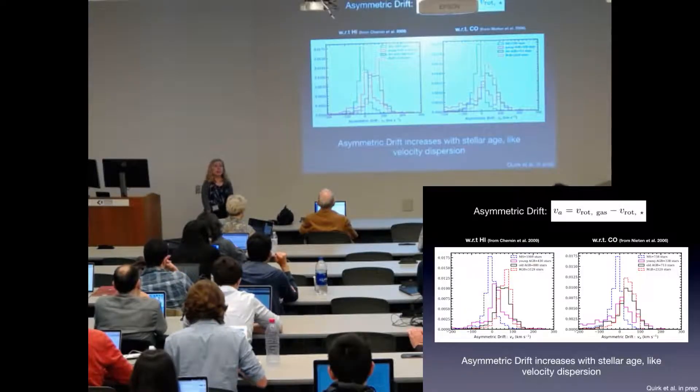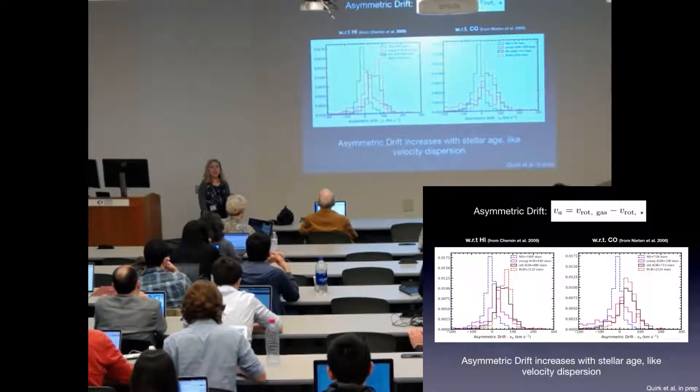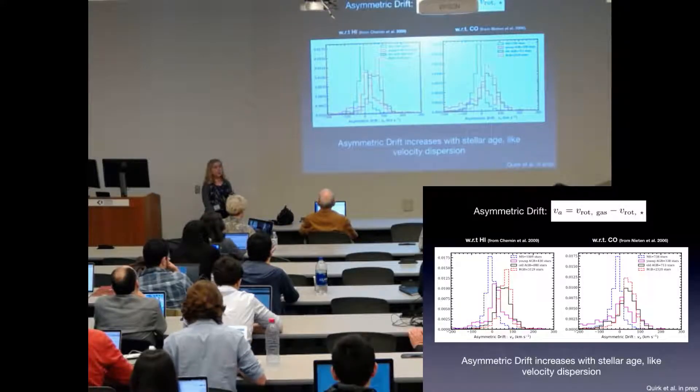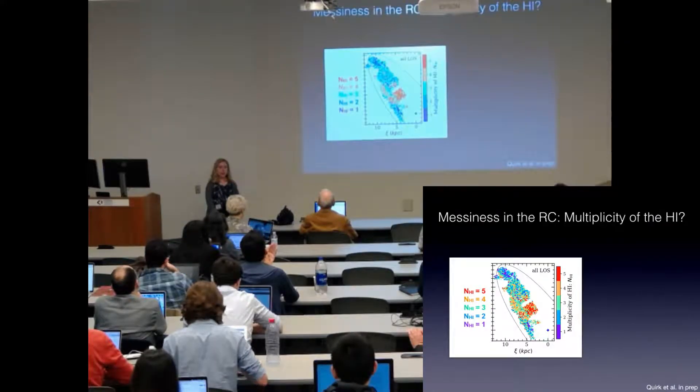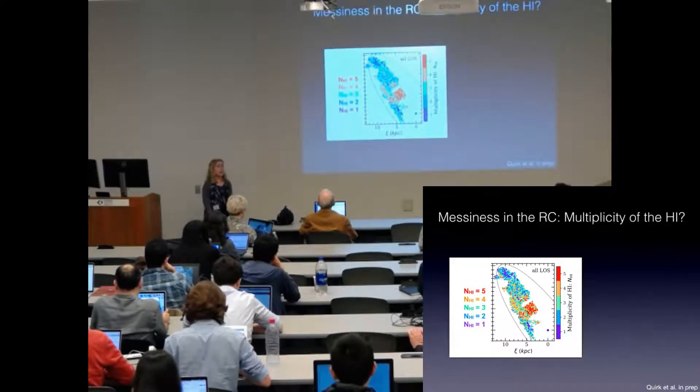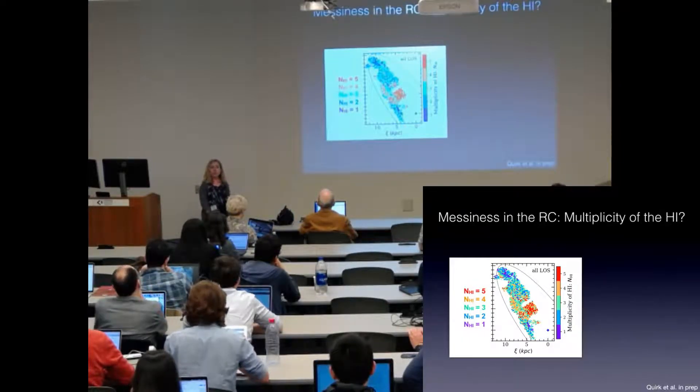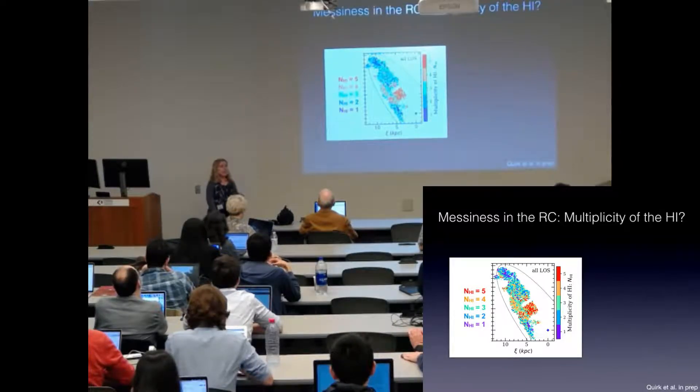So I've examined possible sources of the substructure and scatter. The first that I look at is multiplicity in the H1 spectrum. The H1 covers the entire extents of the stellar population, so I focus on this gas.